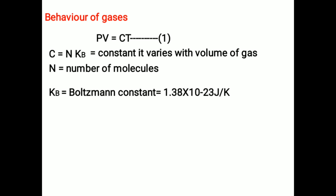Substituting C equals NKB in equation 1, we get PV equals NKBT, which can be written as PV by NT equals KB. It is the same for all gases.